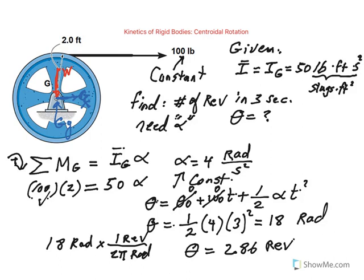So in 3 seconds, this guy will go only through almost 3 revolutions, because it's heavy, has a large mass moment of inertia. So his angular acceleration here is not that large, actually.